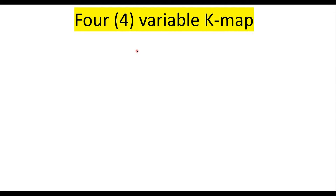In this video I will explain how to use a 4-variable Kmap. Let A, B, C, and D be 4 variables. Then 2 to the power 4 is 16, so the 4-variable Kmap consists of 16 cells.